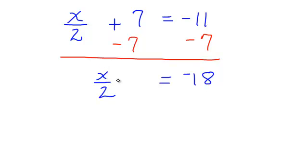x is being divided by 2. What's the opposite of divide by 2? You should say multiply by 2. Or, it's like this is 1 over 2, so I would multiply by the reciprocal 2 over 1. But if I multiply the left side by 2 over 1, I need to multiply the right side by 2 over 1.